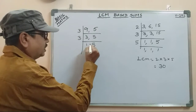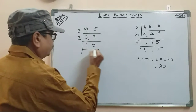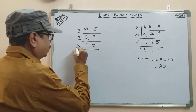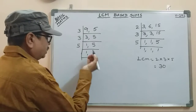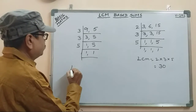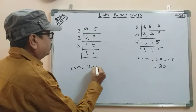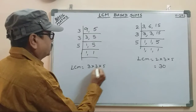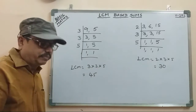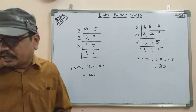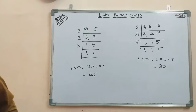The next prime number is 5, then 1. So here we go. LCM is equal to 3 into 3 into 5. 3 into 3 is equal to 9, so 9 into 5 is 45. LCM equals 45. So we will do LCM next.